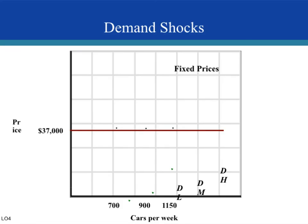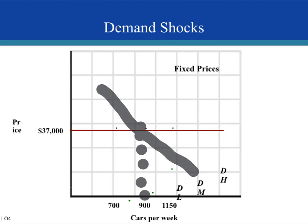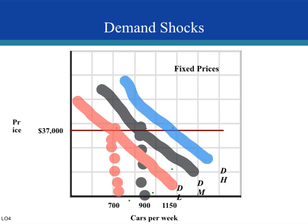When prices are fixed — say they cannot change the price from $37,000 without taking a loss — at medium demand they sell 900 units. But if demand drops, the price stays at $37,000 while output drops to 700 units. If demand increases and price stays the same, output increases accordingly. So with sticky prices, demand shocks affect output rather than price.